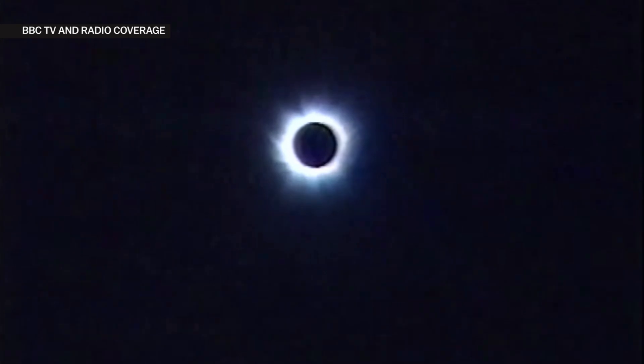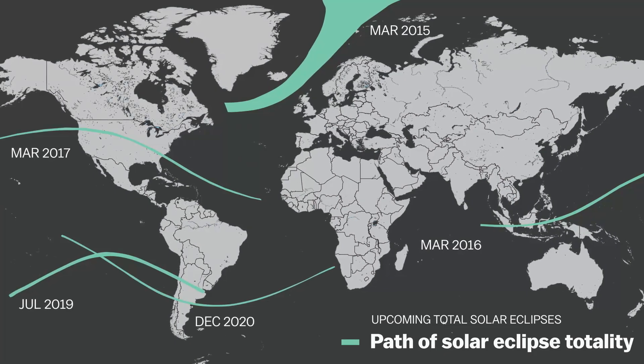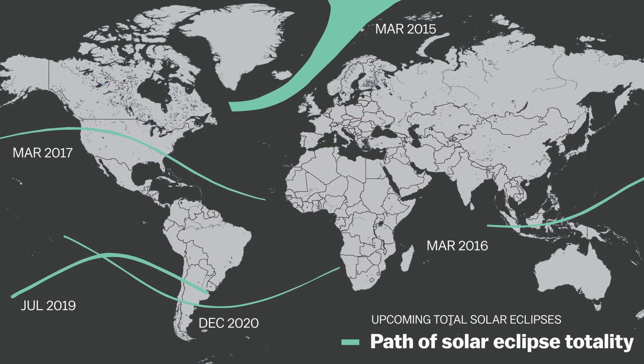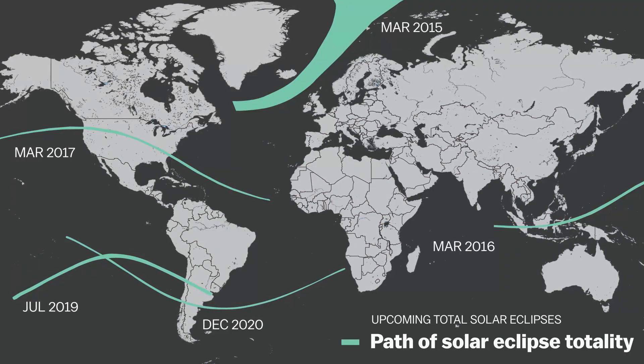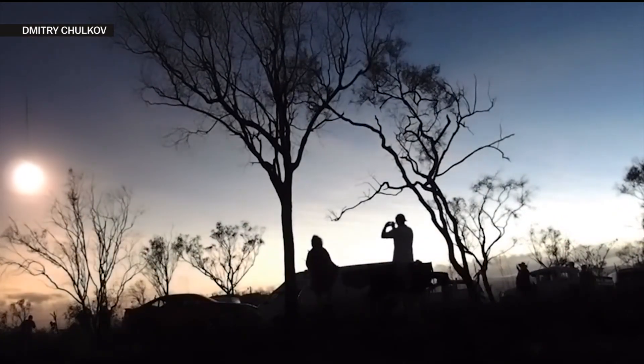The totality lasts no longer than seven and a half minutes and although Earth gets an eclipse like this every 18 months on average, each one is only viewable by less than half a percent of Earth's surface. Eclipse chasers will travel all over the world to put themselves in the path of that shadow.